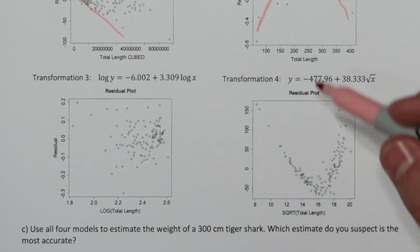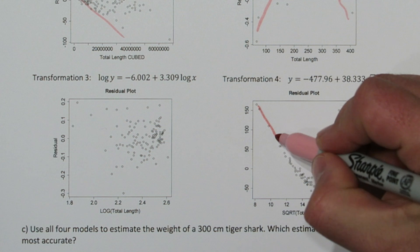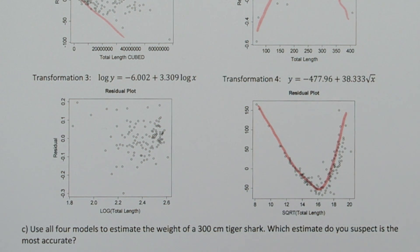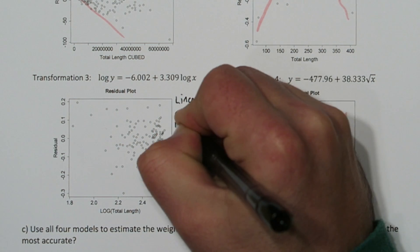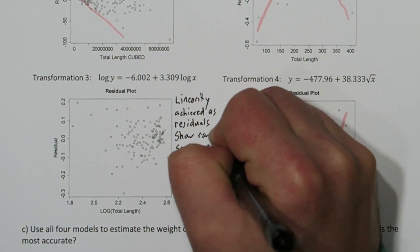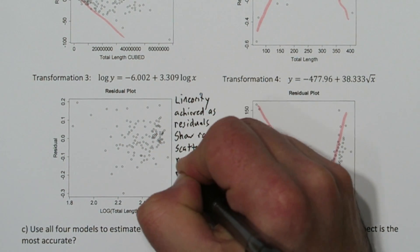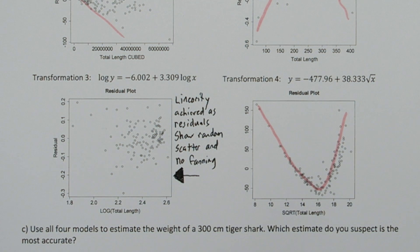And transformation 4 has the same problem transformation 2 does. It's got a pattern in the residuals. So we'll write linearity achieved as the residuals show random scatter and no fanning. And we'll draw an arrow so everyone knows we're talking about transformation 3.